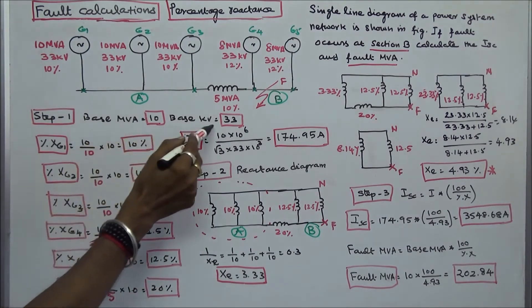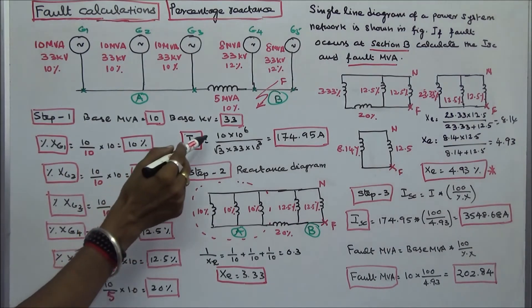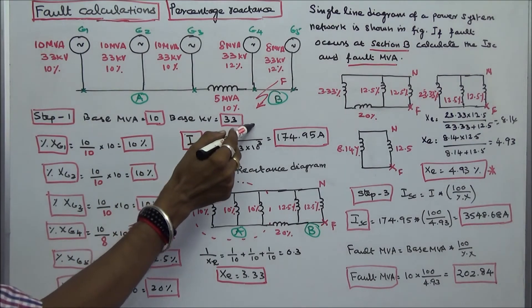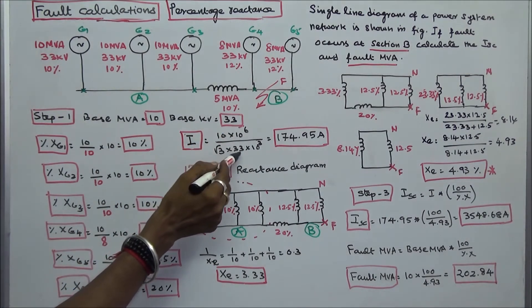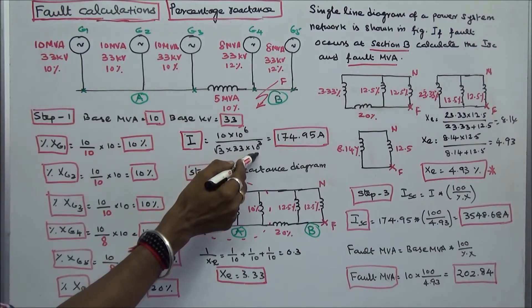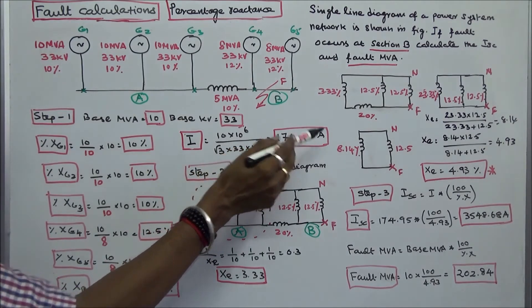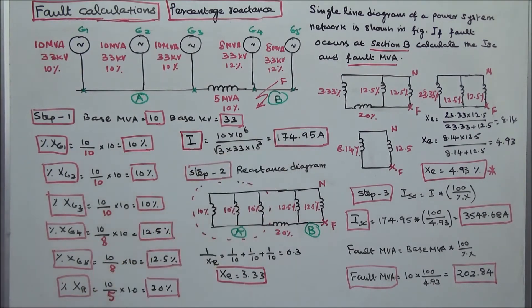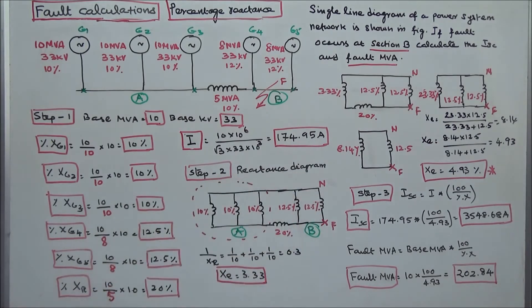Next, I have to calculate the base current I. Base MVA is 10, base kV is 33. I equals 10 × 10⁶ divided by (√3 × 33 × 10³), which equals 174.95 amps. Step 2: I have to draw the reactance diagram.